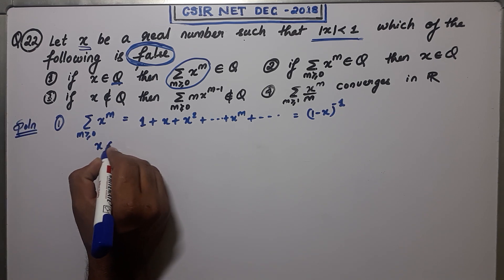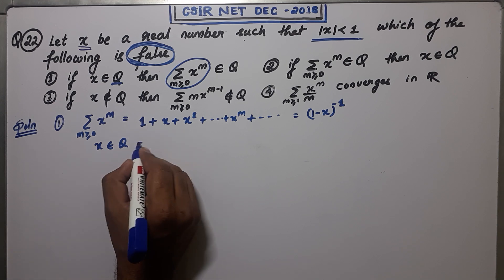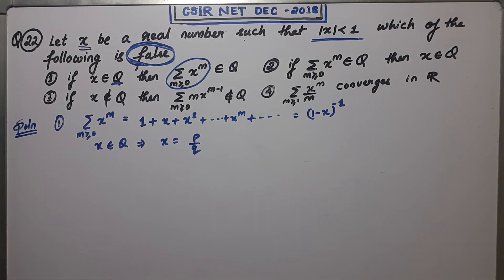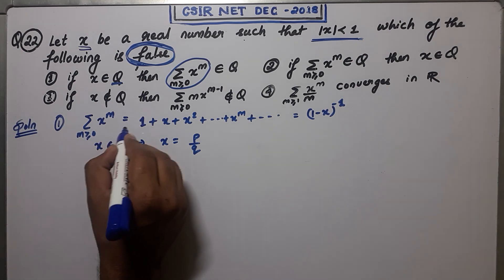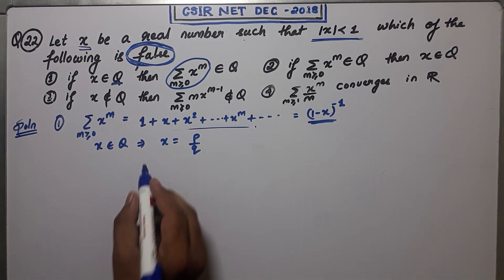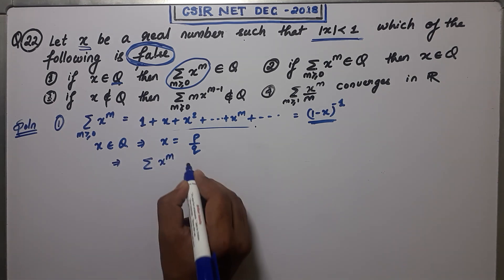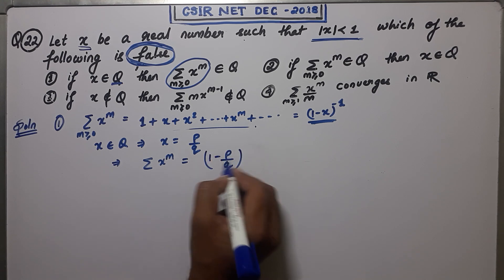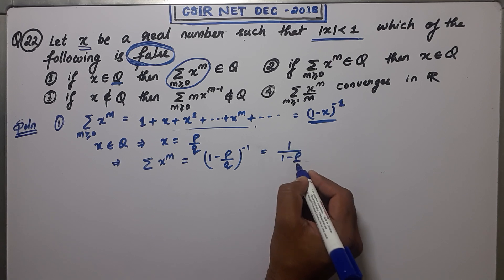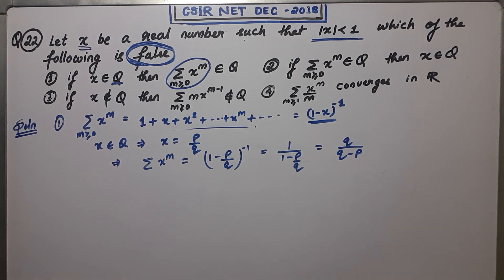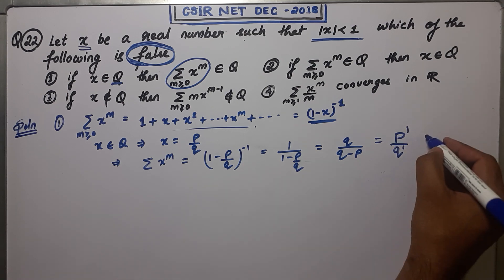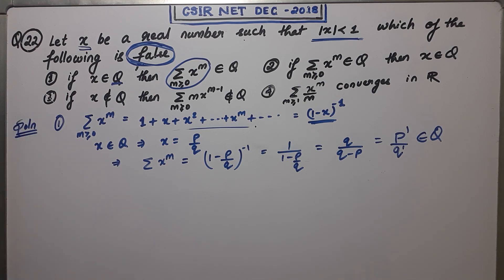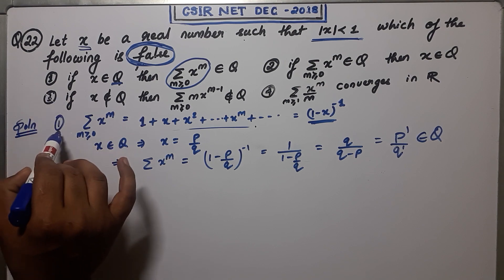You must remember that the sum of the series Σx^m is basically (1 - x)^(-1). Given that x belongs to Q, it implies x looks like p/q where p ∈ Z and q ∈ ℕ. If x is rational, then Σx^m = (1 - x)^(-1) = (1 - p/q)^(-1) = q/(q - p), which is again in the form p'/q', so it belongs to the rational numbers. Therefore, the first option is correct.